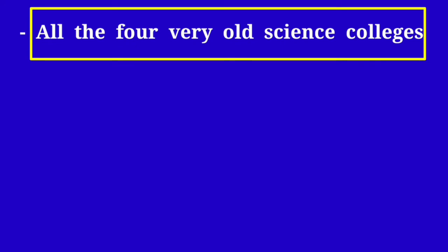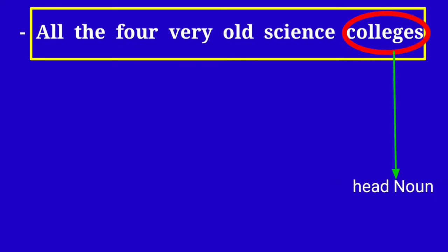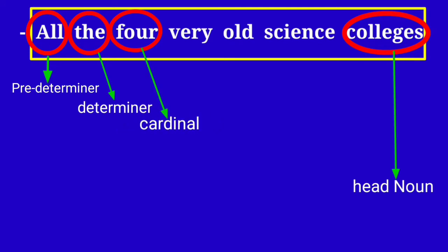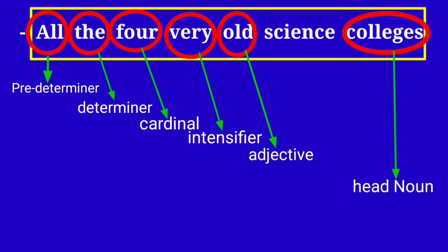In 'all the four very old science colleges', the head noun is 'colleges'. There are six pre-modifiers: 'all' (pre-determiner), 'the' (determiner — article), 'four' (determiner — cardinal numeral), 'very' (intensifier), 'old' (adjective), and 'science' (classifier — a noun which functions as an adjective). The usual pattern of a noun phrase is: pre-modifiers + head noun + post-modifiers.